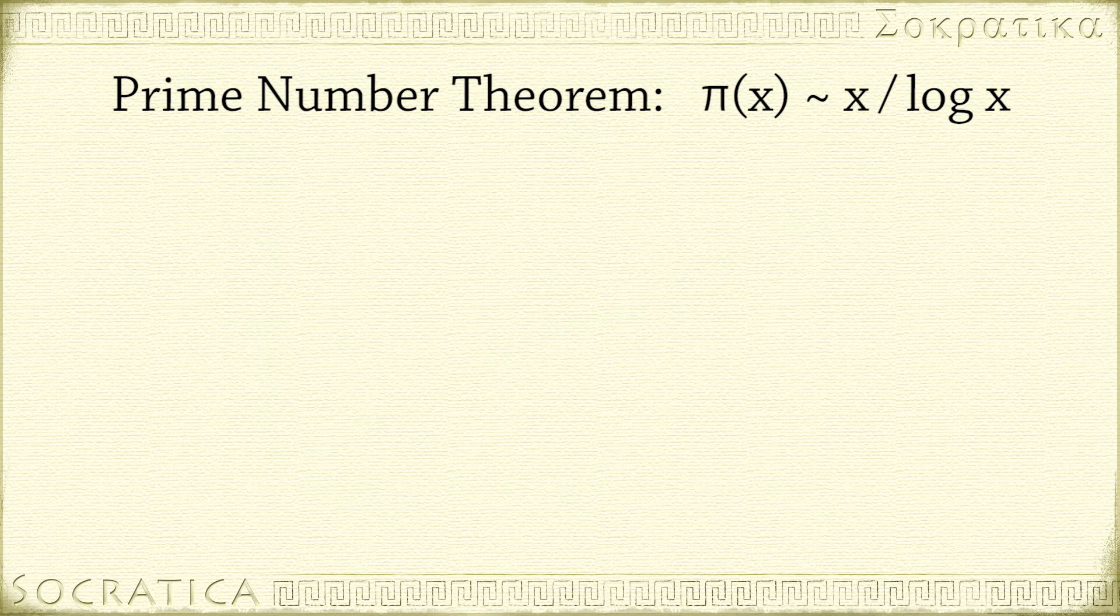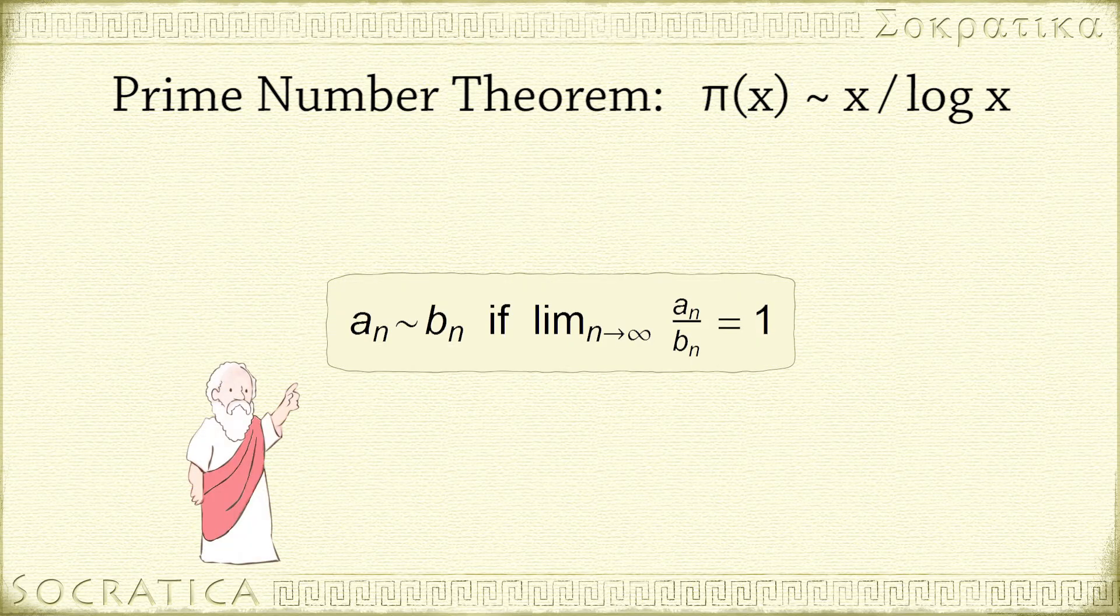The prime number theorem says that π(x) is asymptotically equivalent to x over log x. As a reminder, two sequences a sub n and b sub n are asymptotically equivalent if the limit as n goes to infinity of a sub n over b sub n is 1.